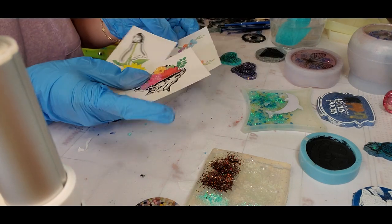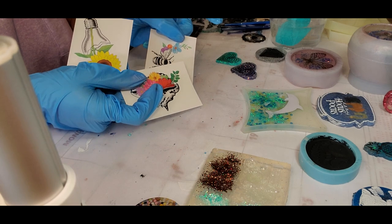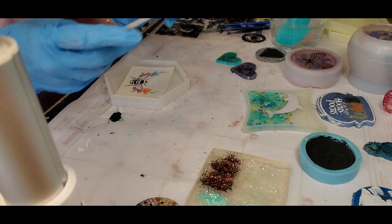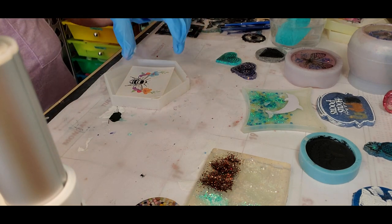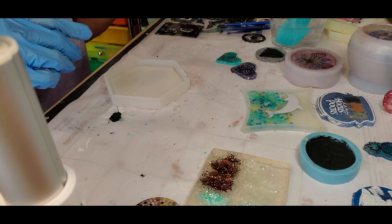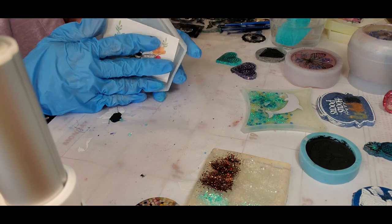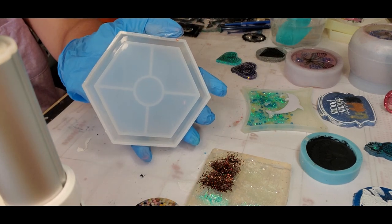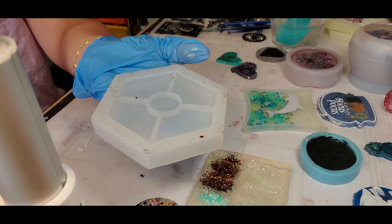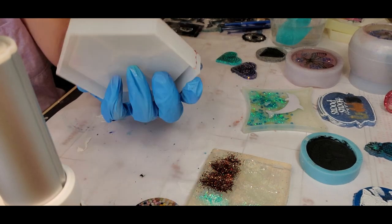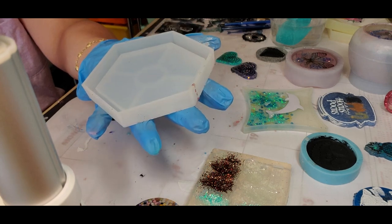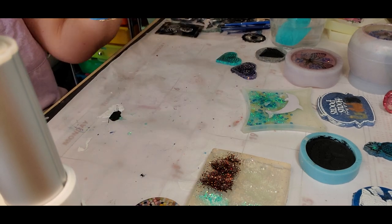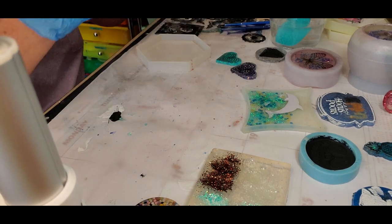These were sent to me by my bestie and they are actually temporary tattoos. So I'm going to start the process of making a coaster with one of these. So as you can see, here is my coaster mold. And everything, when you're using the molds, you have to remember everything is in reverse. So whatever you put in first is going to show on top.